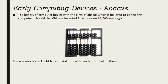The Abacus helped them perform basic arithmetic operations. It is made up of a wooden rack which has metal rods with beads mounted on them. It has two parts: the upper part is called heaven and the lower part of the Abacus is called earth.